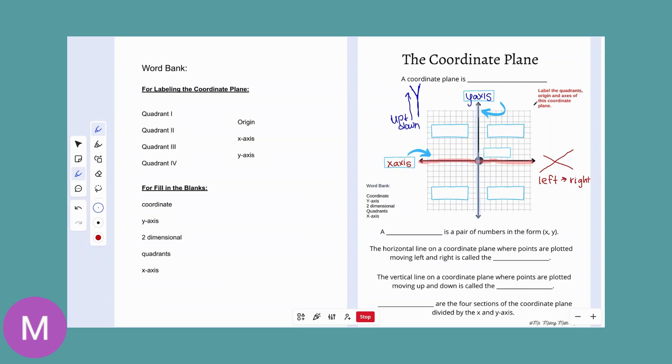So remember that our up and down axis is our y-axis and our left and right axis is our x-axis. So if we're using our word bank over here, we've already filled in the y-axis and we have filled in our x-axis. We have a point right here in the middle where the two axes come together and it is called the origin. If you think about driving a car, it's where the intersection happens of two main roads.